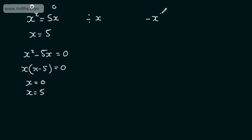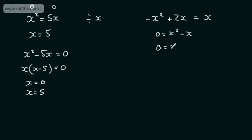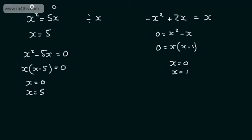For -x² + 2x = 0, make life easier by rearranging to get a positive x squared term: add x² and subtract 2x from both sides, giving x² - x = 0. Factor: x(x - 1) = 0, so x = 0 or x = 1. It's generally better to have a positive coefficient on the x squared term before factoring.